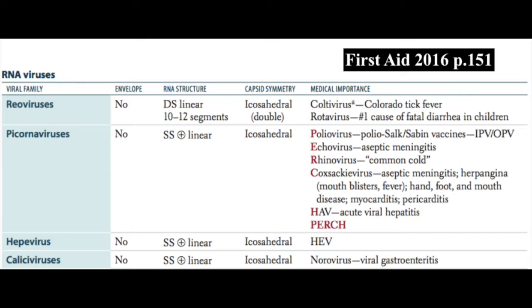The picornavirus family also contains echovirus, which causes aseptic meningitis; rhinovirus, which is associated with common colds; the coxsackieviruses, which include aseptic meningitis pictures as well as herpangina, febrile pharyngitis, hand, foot, and mouth disease, and myocarditis; and hepatitis A virus, which causes acute viral hepatitis.